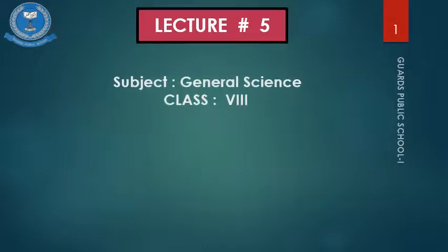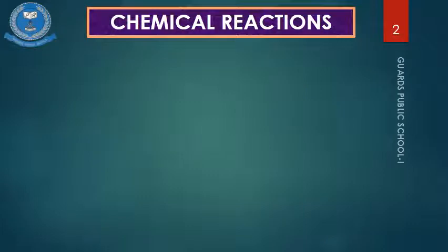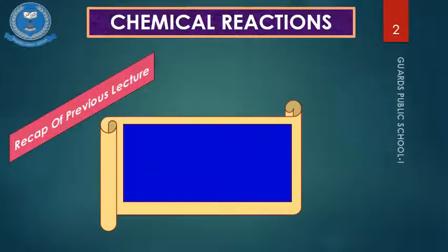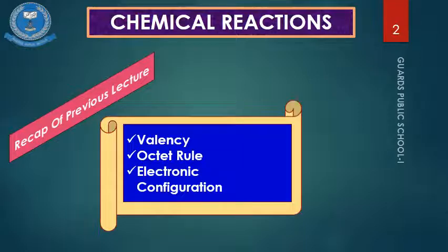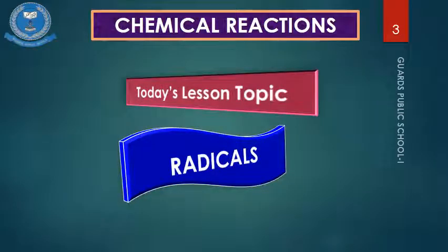Bismillahirrahmanirrahim, Assalamu Alaikum. This is our fifth lecture of General Science for Class 8. In our previous lecture we discussed valency, methods to calculate valency using the octet rule as well as electronic configuration. Today we will discuss about radicals. If your concept about valency is clear, you can easily understand this topic. These topics are not in the book, so be careful and attentive while listening.